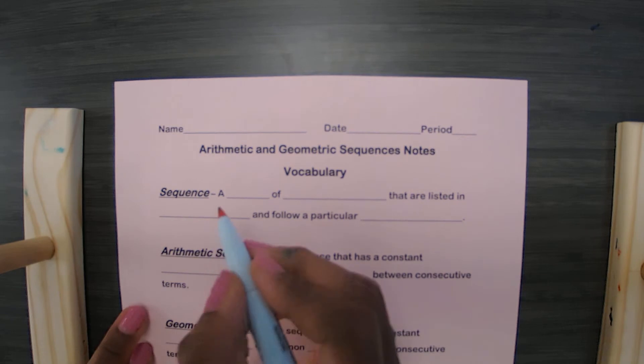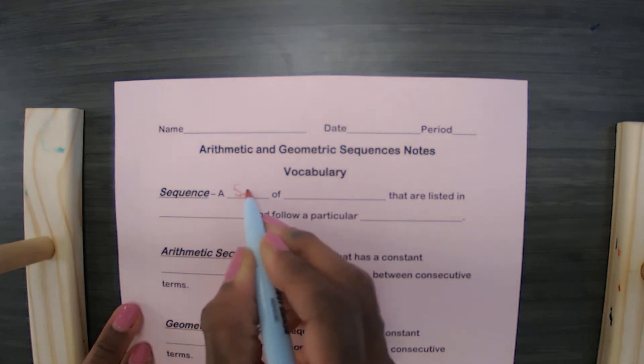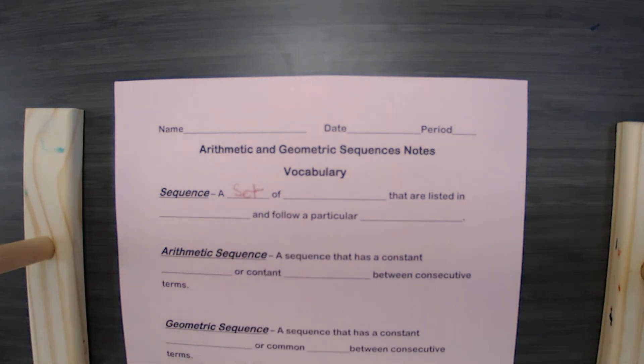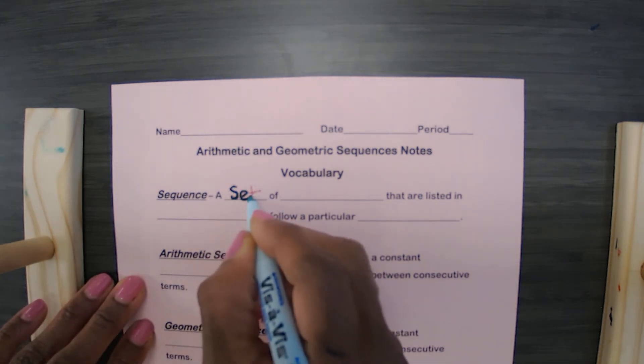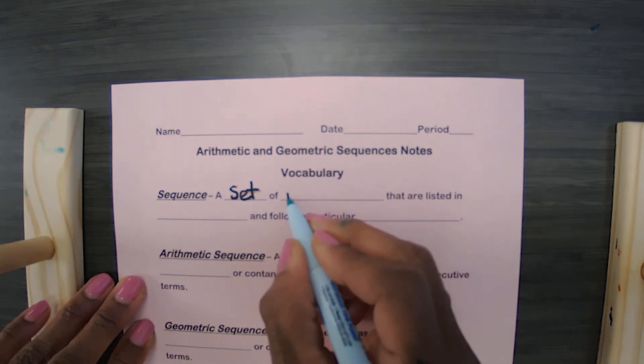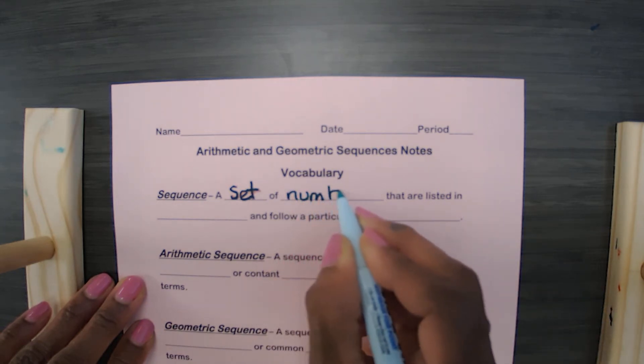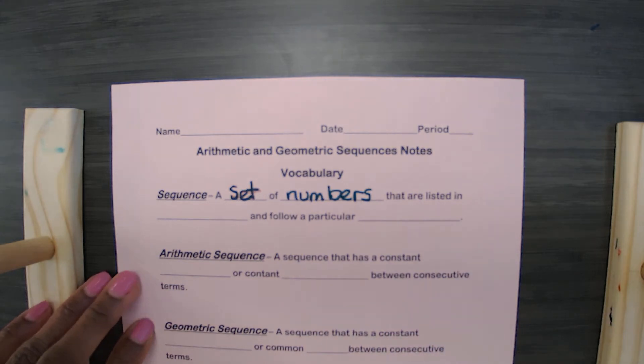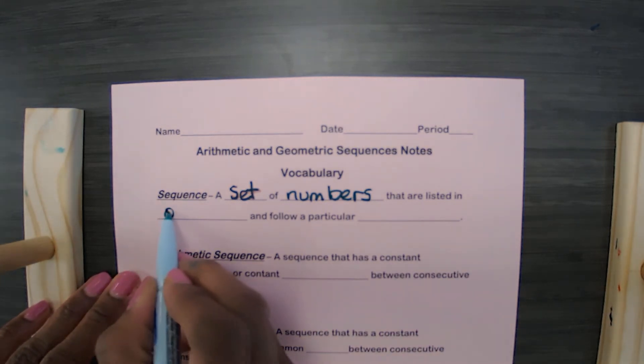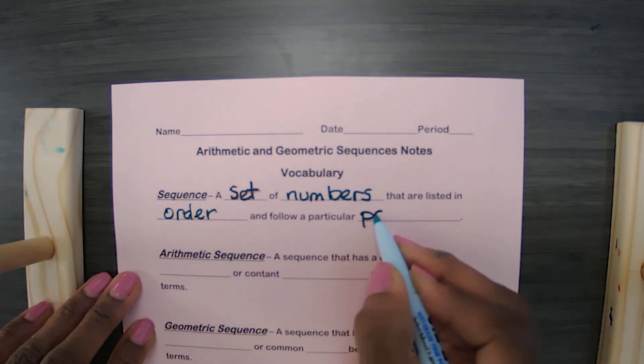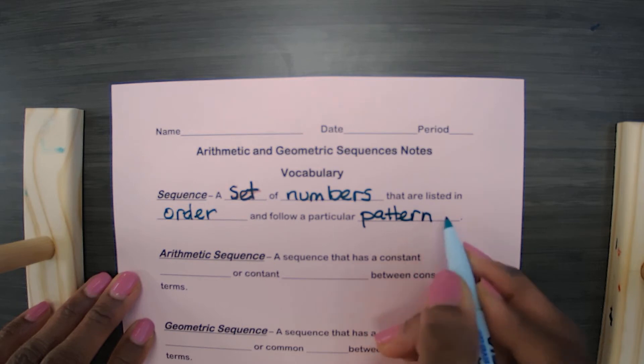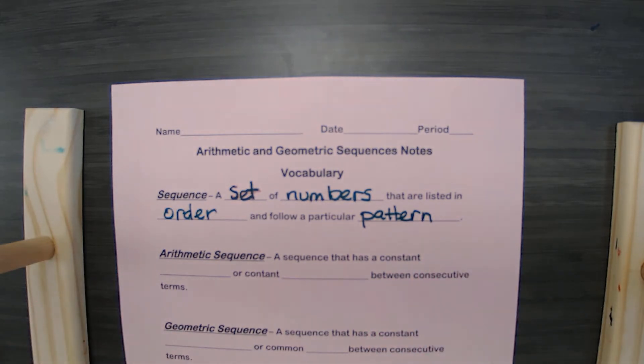For starters, a sequence is a set of numbers that are listed in order and follow a particular pattern. So if there's no pattern you don't have a sequence. If they're not in order then you have no sequence.